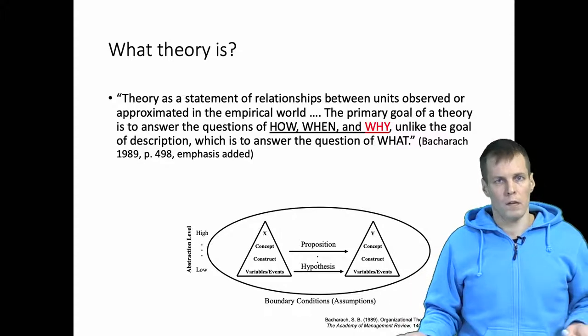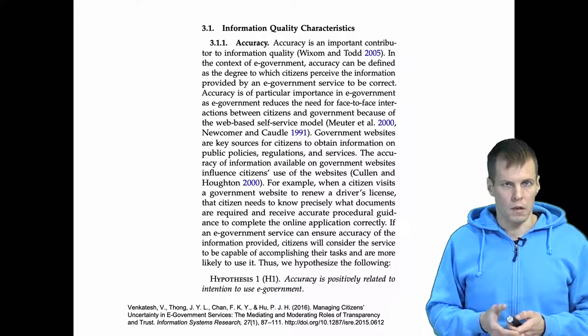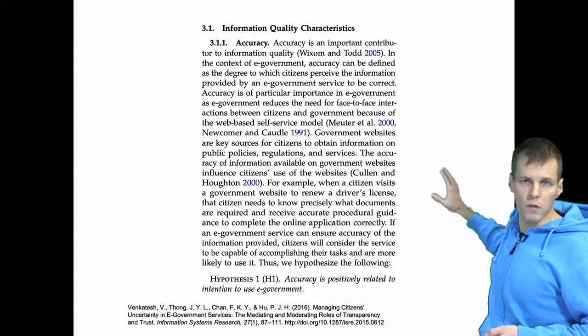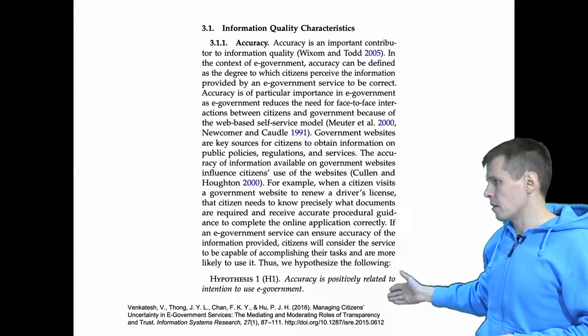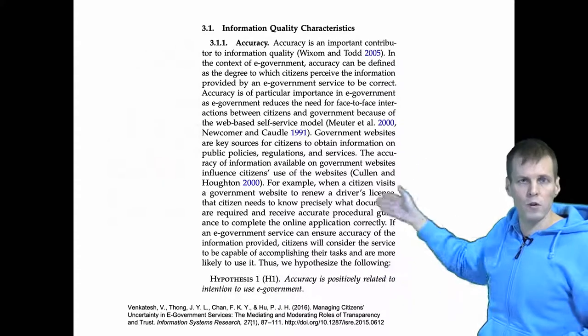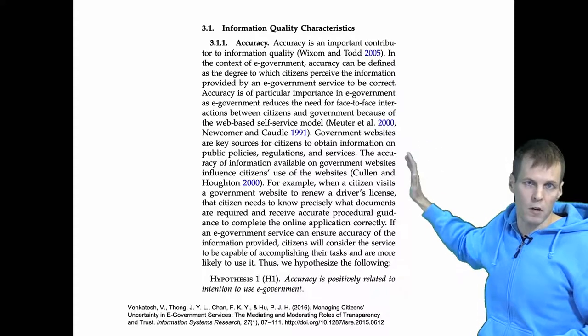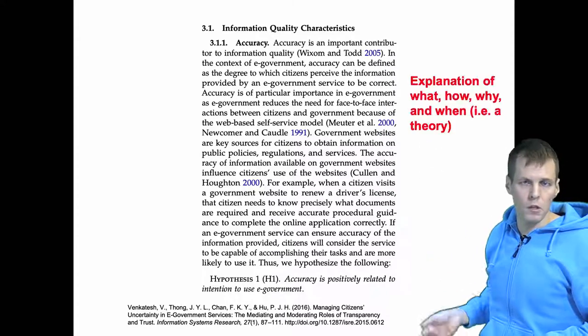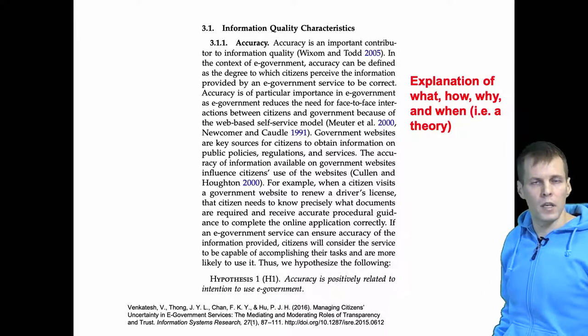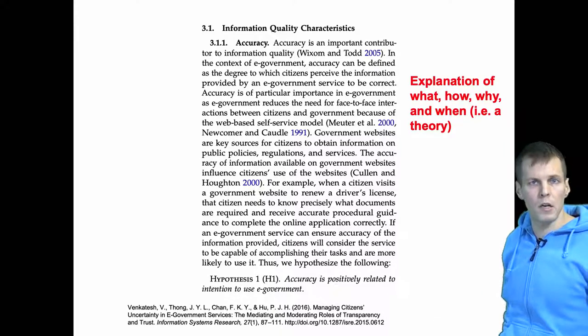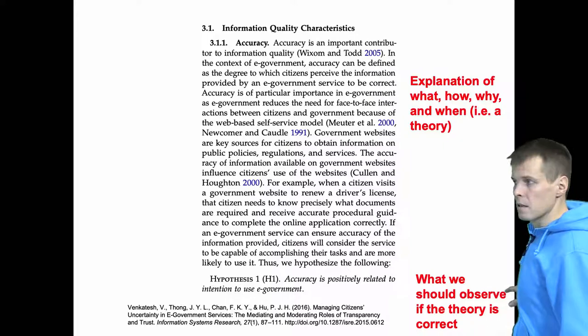How do we work with theory then? In quantitative research, it's quite common to see this kind of construction in articles. You first have an explanation of a theory. This is from information systems research, and the theory here is that information accuracy leads to higher intentions to use e-government services. If the government service provides more accurate information, then people are more likely to use it. There's one paragraph explanation of how that process plays out. So we have theory here, explanation of particularly what and why happens, and then we have a hypothesis. The role of the hypothesis is to be a test of that theory. The idea is that if this theory is true, then we should observe this hypothesis.